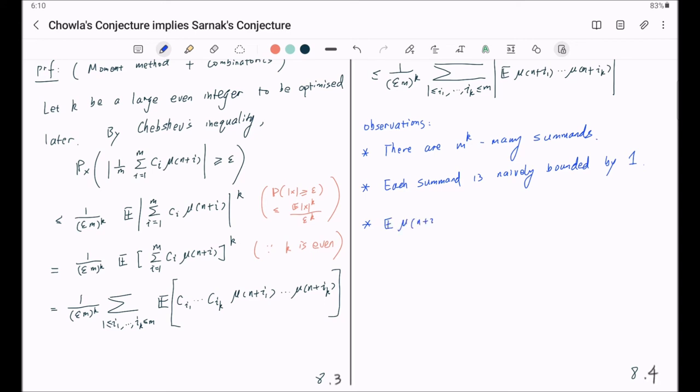each summand will be a little o of 1 as x goes to infinity. And there is a dependence on m. This means this is a function of x and m, and it will go to zero as x goes to infinity.